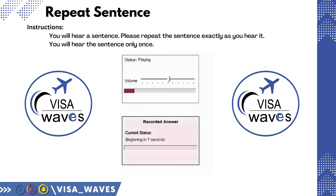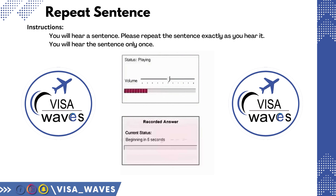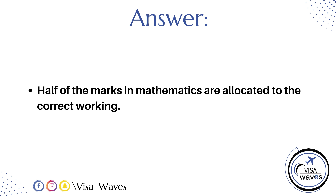You should include your name and identity number in the registration form. Half of the marks in mathematics are allocated to the correct working.